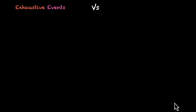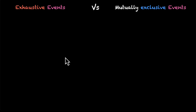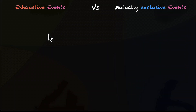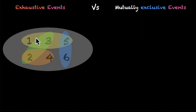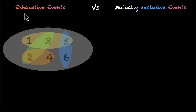Sometimes exhaustive events are confused with mutually exclusive events — that's something we covered in the previous video. Now let's pay attention to the difference between the two. Exhaustive events have to do with teamwork: together they cover the entire sample space. They're not competing against each other; they team up and cover the entire sample space, and when they can do that, they'll be exhaustive events.